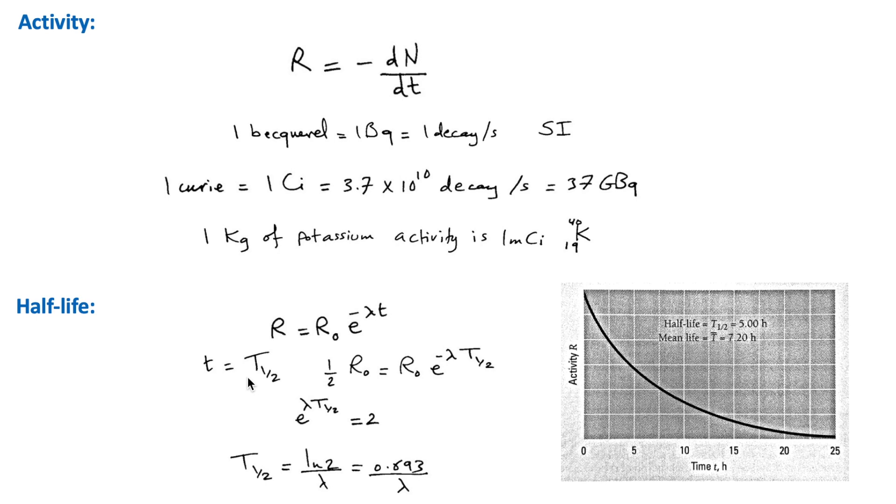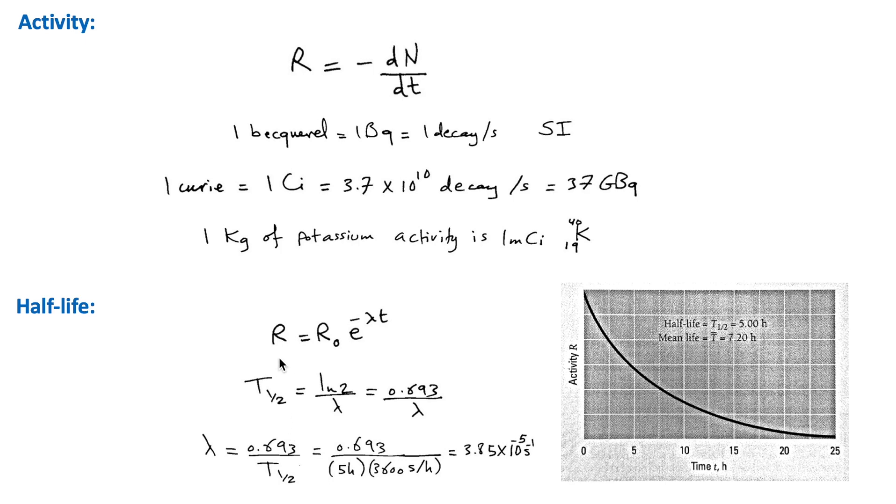At T equals the half-life period, the activity will drop to half of its initial value, so R equals R0 over 2. If we take the natural logarithms of both sides of this equation, we get this expression for the half-life. For example, if T half equals 5 hours, we get this value for the decay constant.